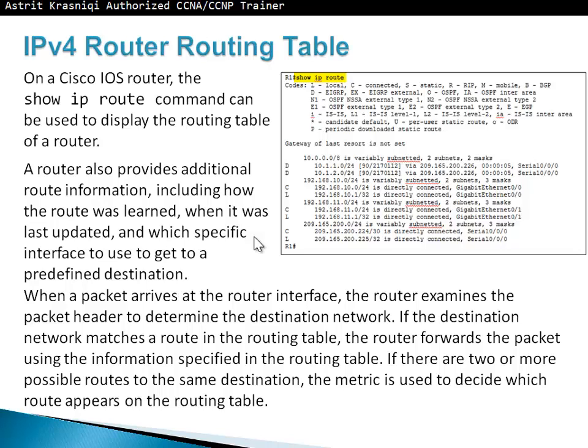On a Cisco IOS router, the command show ip route can be used to display the routing table. A router also provides additional route information, including how the route was learned, when it was last updated, and which specific interface to use to reach the predefined destination. When a packet arrives at the router, it examines the packet header to determine the destination network and forwards using the routing table. If there are two or more possible routes to the same destination, the metric is used to decide which route appears in the table.